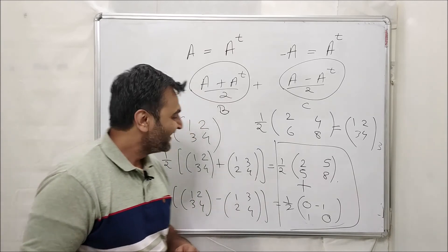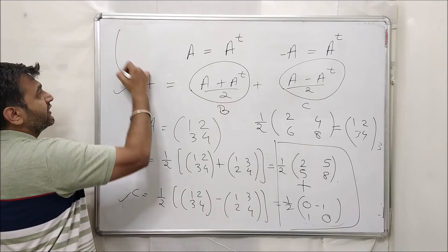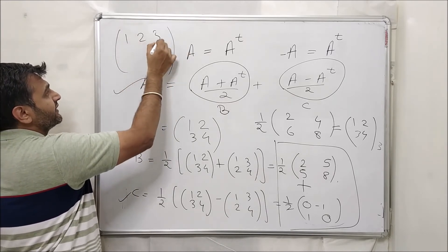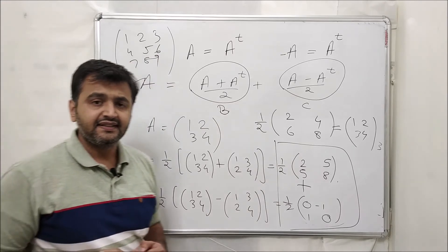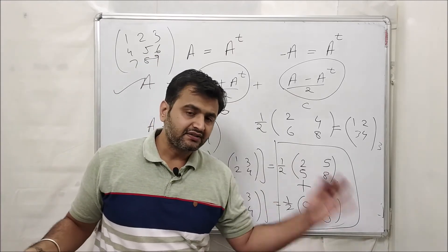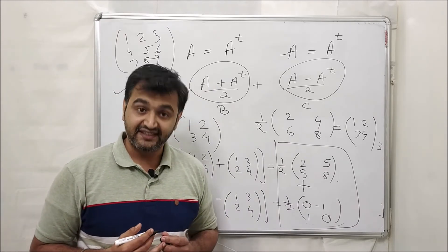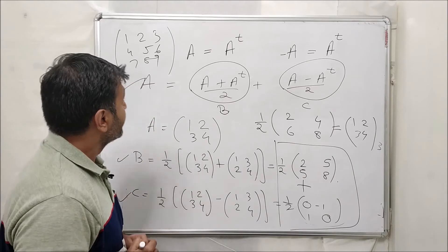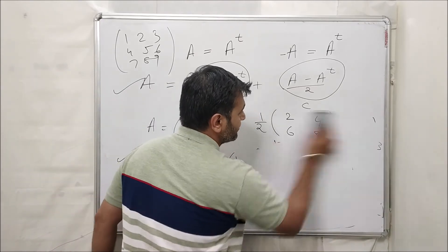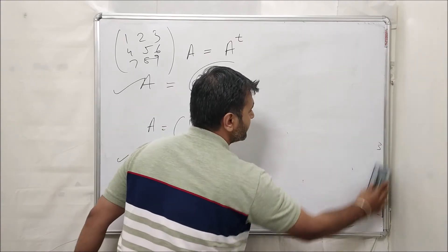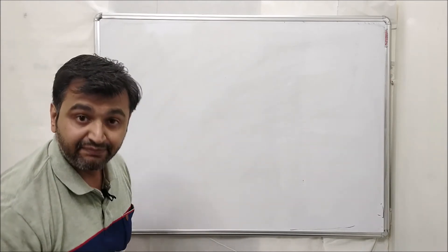For homework, try the 3×3 matrix [1,2,3; 4,5,6; 7,8,9] and write it as a sum of symmetric and skew-symmetric matrix. Post your answer in the comments. Now, at the start I mentioned that this decomposition is unique. Let's prove the uniqueness part.